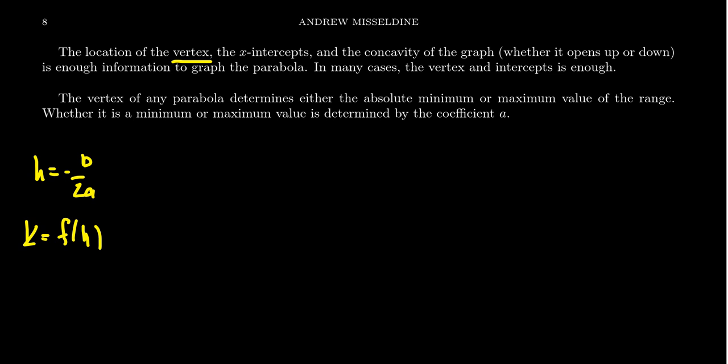If we want to find the x-intercepts of a quadratic function that looks like f of x equals ax squared plus bx plus c, we have to solve the quadratic equation f of x equals 0, which we can solve by factoring and completing the square.